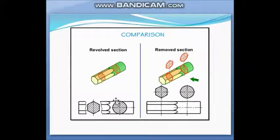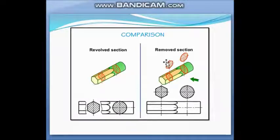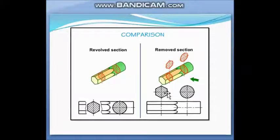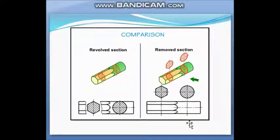This is the sectional view drawn on the surface of the object. But in the removed section, we get the same type of section view, except it is drawn outside the object — not on the object. You can draw this view below the object or anywhere, but not on the object itself.